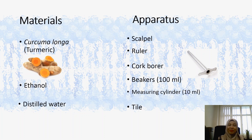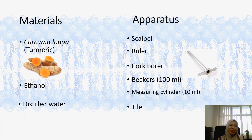These are the materials and apparatus needed to do this experiment. You need kukumalonga, ethanol, and distilled water as the materials. For apparatus, you need a scalpel, ruler, cork borer, beakers, measuring cylinder, and tile.